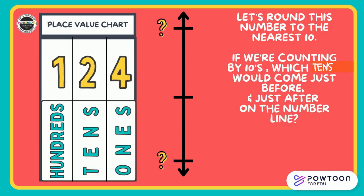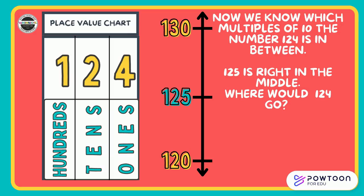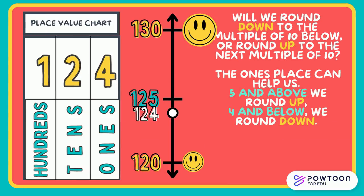Let's round this number to the nearest 10. Counting by tens, which tens would come just before and just after on the number line? Pause the video and figure it out with your partner. Now we know which multiples of 10 the number 124 is in between. We can see 120 right below and 130 right above. 125 is right in the middle of those two. So where would 124 go? Point to it on the number line. The ones place can help us — 5 and above, we round up; 4 and below, we round down. I can see a 4 in the ones place of 124, so that tells me I'm rounding down. 124 rounded to the nearest 10 is 120, or 12 tens.